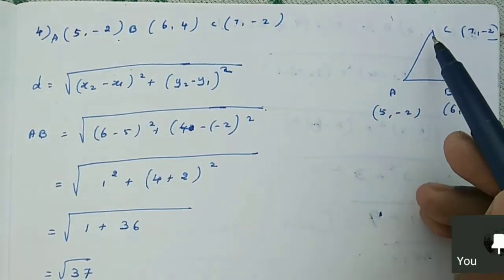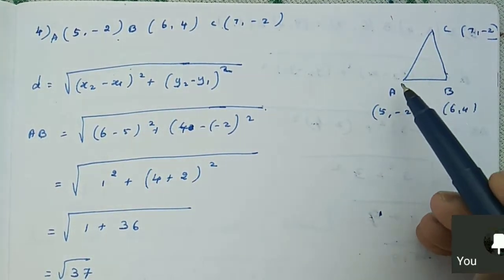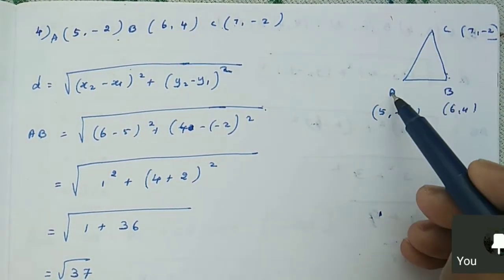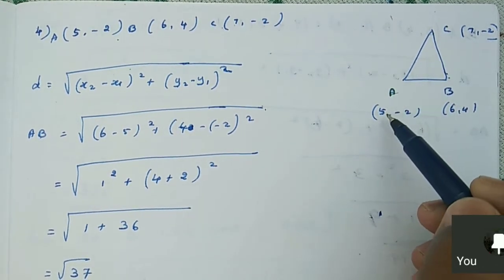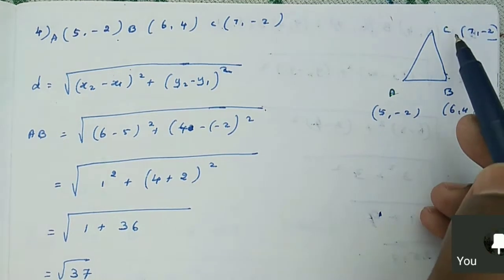First, I'll draw a rough sketch. It's not an exact sketch, just a rough sketch of the triangle. I mark it as A, B, C as the vertices. So A is (5,-2), B is (6,4), and C is (7,-2).